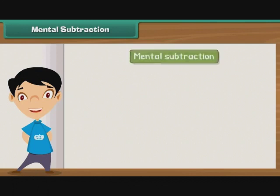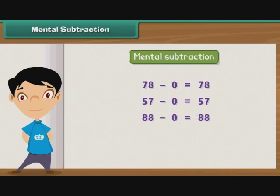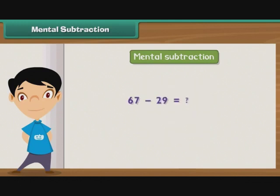We can perform mental subtraction in a manner similar to mental addition. Zero is the easiest number to subtract. So we will always try to make the second number, that is, the number to be subtracted, end with 0. Let us try to subtract 29 from 67. Since the second number must end with a 0, we subtract 30, not 29, from 67. The subtraction gives us 37. But we subtracted an additional 1. So we add 1 to the difference. Thus, the result of subtracting 29 from 67 is 38.